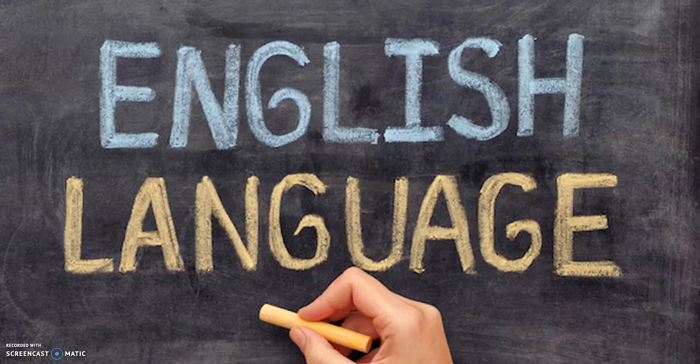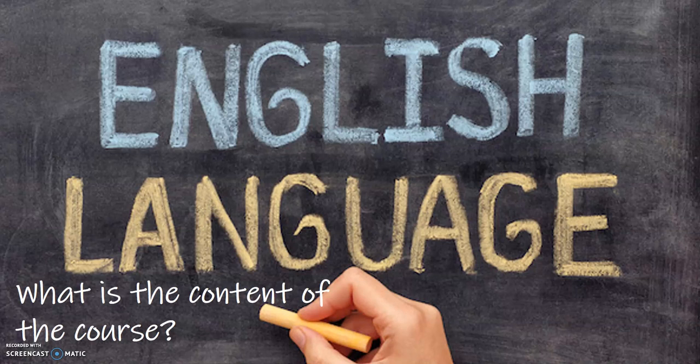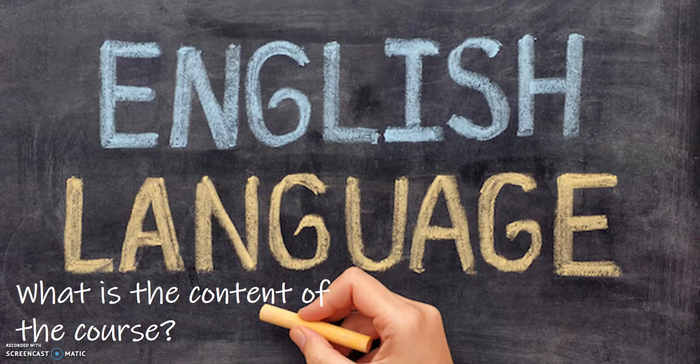Whilst you'll be familiar with the English Language course from your GCSE, the A Level in English Language is really quite different. I really hope in this video to give you a taste of the vast range of topics and ideas that you get to explore and the different skills that you'll develop as part of the A Level in English Language. This is a linear A Level, meaning that over the course of the two years you will work towards the full A Level in English Language.